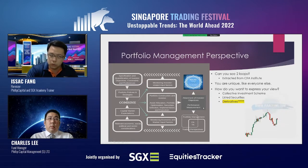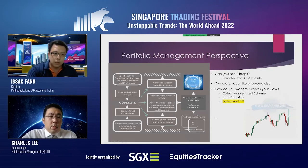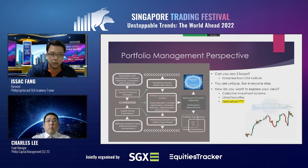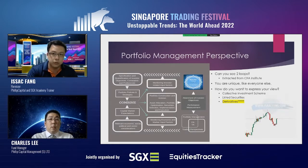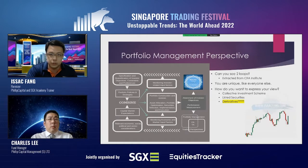I always like to share with my clients about asset allocation. Lately, due to the Ukraine-Russia conflict, people are talking about gold. There are a few ways to express your view on gold: you can buy the gold ETF, which is a collective investment scheme; you can buy CNMC Gold Mine, which is a gold mining company; or you can also look into derivatives like gold futures.